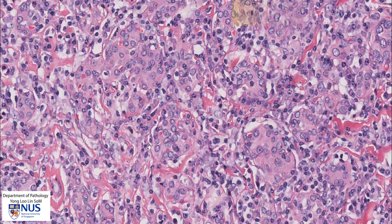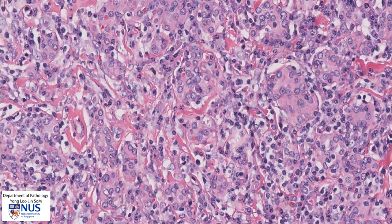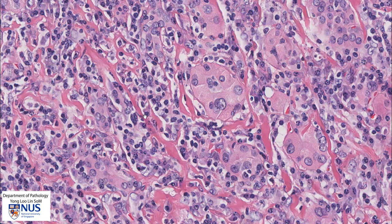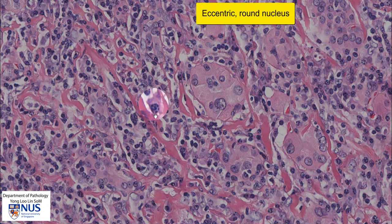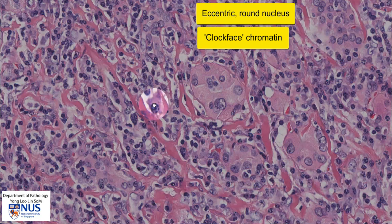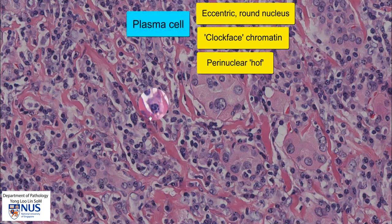Among the lymphocytes, we also see other cell types. For example, over here we can see a cell that is larger than a lymphocyte. This cell has a very eccentric, rather round nucleus, and the nuclear chromatin has a very coarse clock-face kind of arrangement — it is clumped towards the periphery of the nucleus or towards the nuclear membrane. Beside the nucleus is a slightly pinker, paler area known as a perinuclear hoff, and more peripherally in the cytoplasm there is a bluish hue. This is the classical appearance of a plasma cell.